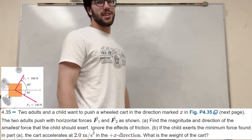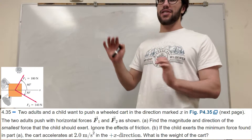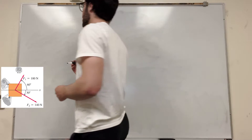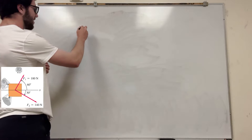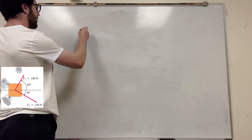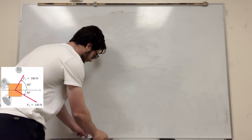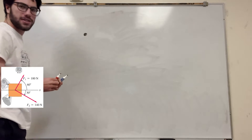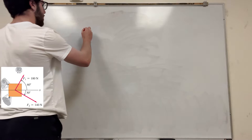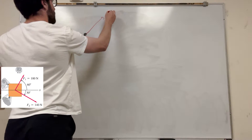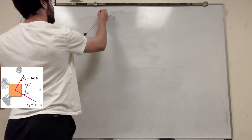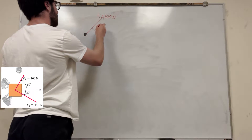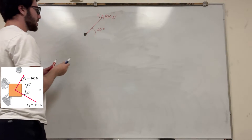It's got two adults and a child, and they're pushing on this block in different directions. They're trying to make it go straight in the X direction. So let's draw a force body diagram — force body diagrams are going to be very useful in all of physics. So force one points in this direction: this is 100 newtons, and its angle is 60 degrees, which is a very important piece of information.